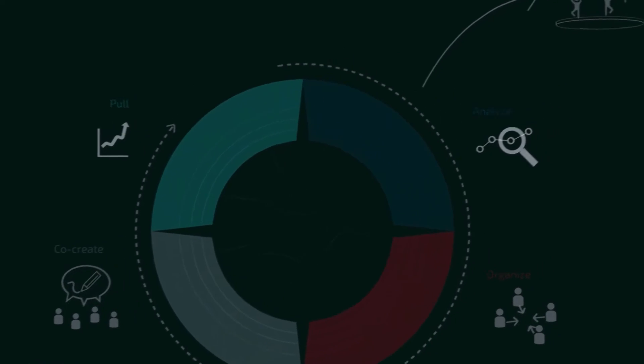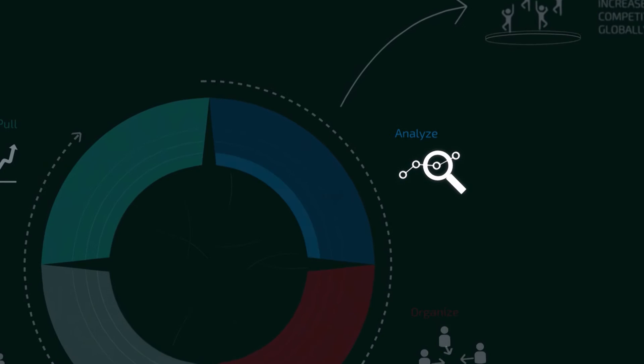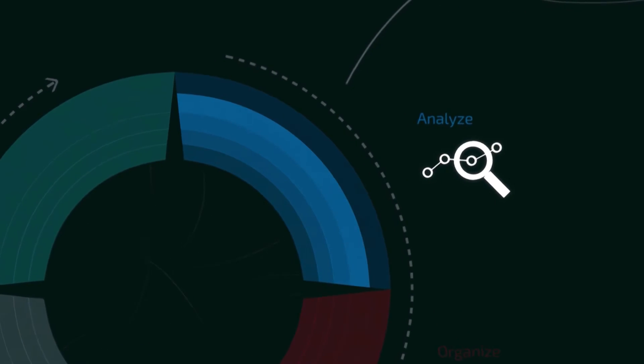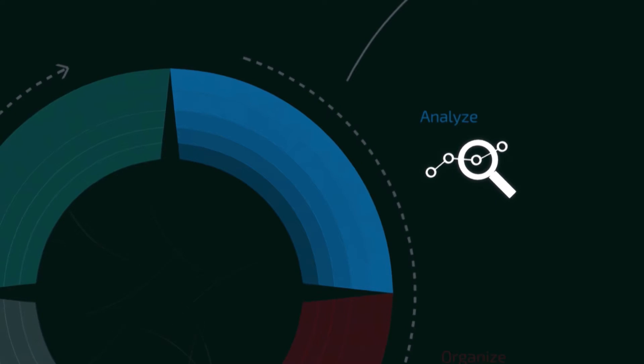Once you have identified the pull, you enter the second element of the model: analyze. Here you move from a macro level to a micro level of analysis. When we go in and analyze a market, we try to identify the drivers on the market — the drivers for our water treatment technology. The drivers could be, for example, environmental laws and environmental regulations, which put limits on what kind of water you can discharge into the rivers or into the seas.